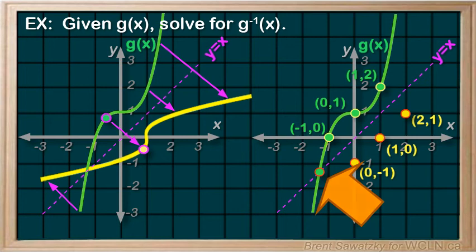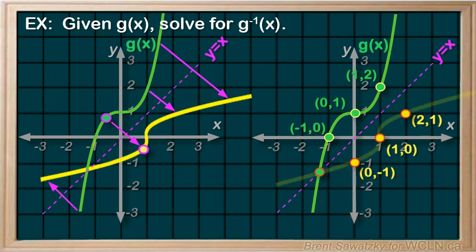It doesn't change with our transformation. So, we ended up with 4 points plotted. And with a general shape, we can plot our inverse relation.